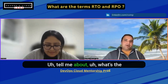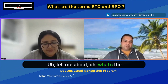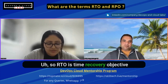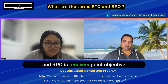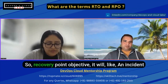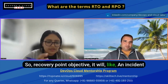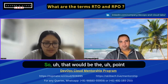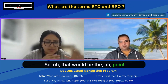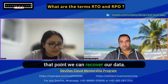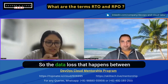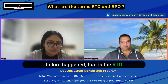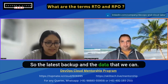What's the difference between RTO and RPO? RTO is Recovery Time Objective and RPO is Recovery Point Objective. Recovery Point Objective — when an incident has happened, the most recent backup we have is the point from where we can recover. The data loss that happens between that last backup and when the failure happened represents the RPO.